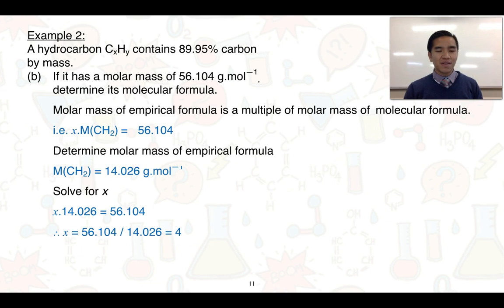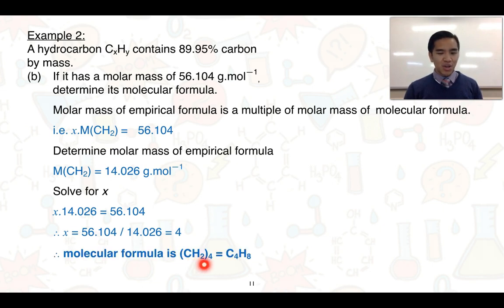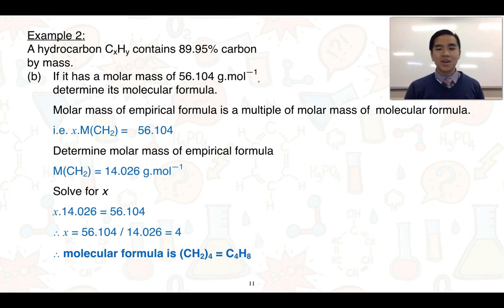So x equals 4, meaning the molecular formula is 4 times CH2. Writing that out as a molecular formula, we get C4H8.